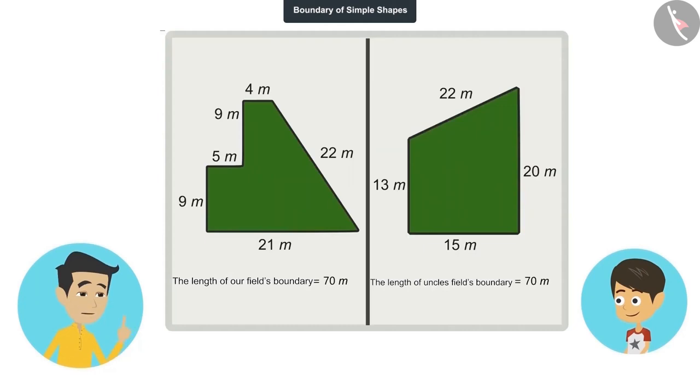You can find it by looking at these fields also. Look, our farm has six edges, while your uncle's field has four edges. But the measurements of the boundaries of both fields is the same.